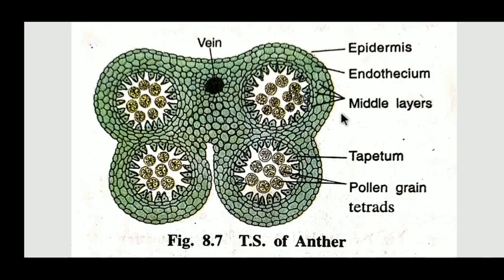The second layer is endothesium. Endothesium is inner to the epidermis. These cells are somehow polygonal, single layer, and are the endothesium. They are common for pollen sac, which are single layer. These are fibrous cells because of collagen present in them, making them little bit fibrous. They are situated in the shallow groove between two microsporangia and remain thin-walled.